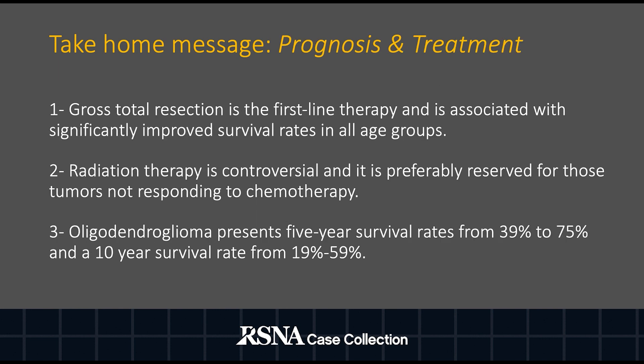Regarding prognosis and treatment, gross total resection is the first-line therapy. Radiation therapy is reserved for tumors that do not respond to conventional treatment. The survival rate is variable at 5 and 10 years and depends on the tumor grade, patient's age, and response to treatment.